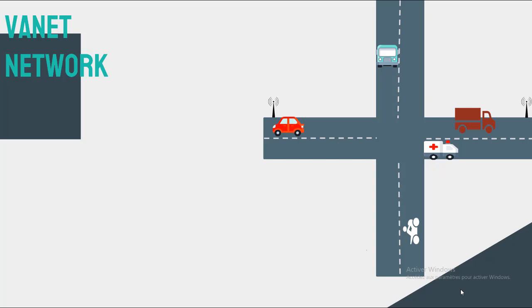In order to make the communication possible, the vehicles should have an OBU, which is a GPS tracking device that is equipped in every vehicle to share information. We also have the RSU, or roadside unit. It is a computer device which is installed all along the road or in a specific location, such as a parking area. It aims to provide connectivity to the passing vehicles.